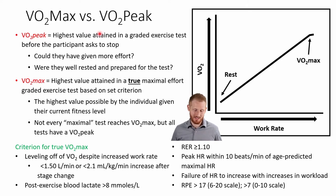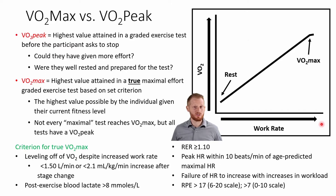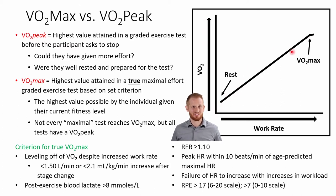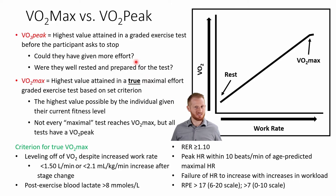Now let's talk about the difference between VO2 max and VO2 peak. VO2 peak is simply the highest value attained during a graded exercise test — a test where work rate increases every few minutes, getting harder and harder, with oxygen consumption rising accordingly. Whatever the highest value is when the person stops is the VO2 peak. The question is: was it their best effort, or were they affected by poor sleep, illness, or lack of motivation?